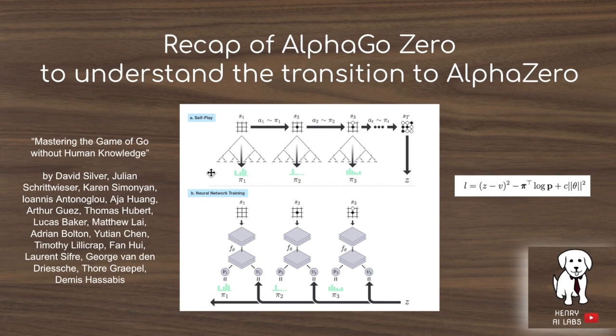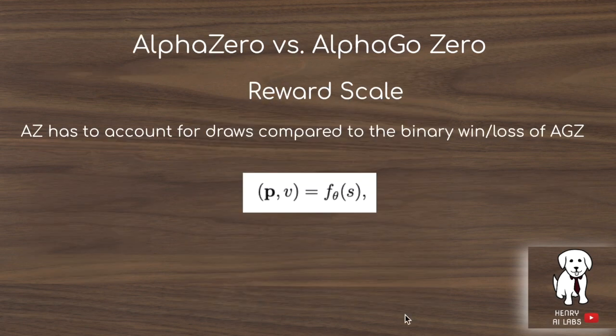AlphaZero uses the same algorithm, but extends it into chess and shogi. It also makes some slight modifications to how the algorithm is implemented in order to make it more general.